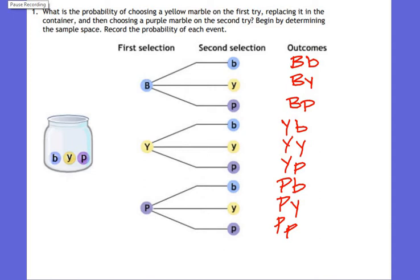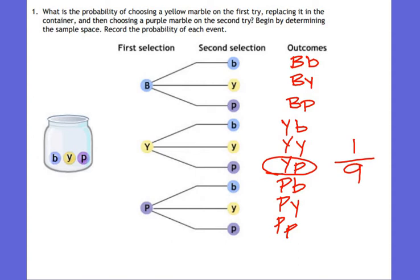So how many total possibilities could have happened with selecting two marbles? Nine. There are nine different outcomes that could happen. They wanted to know: first picking a yellow, replacing it, and then picking a purple. How many yellow-then-purple outcomes are listed? One. One out of a total of nine. So the probability of getting a yellow first then a purple is 1/9. The tree diagram helps us see all the possible outcomes.